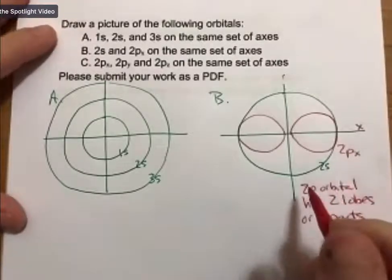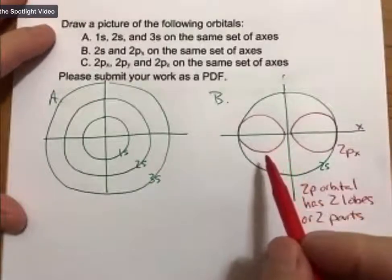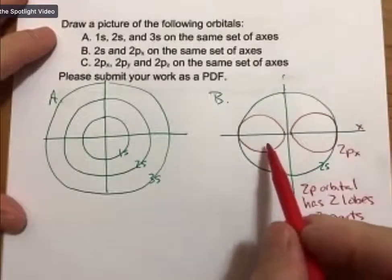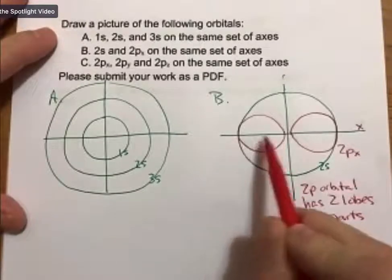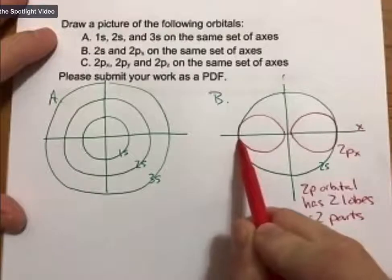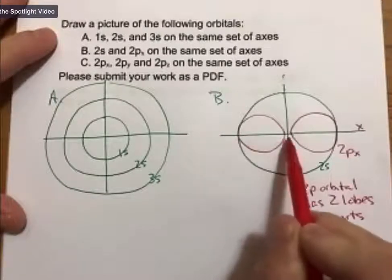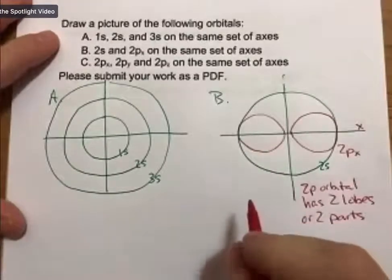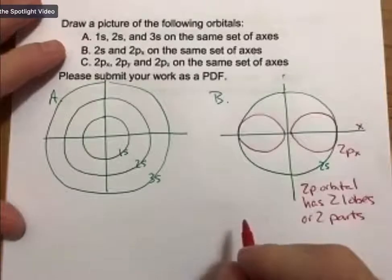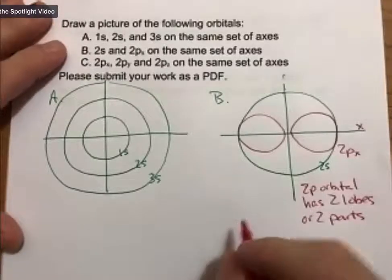The reason I wanted you to draw this, even though I didn't cover it in the lecture, is that you can see that the 2s and the 2p orbitals both end at approximately the same distance from the nucleus. That's an important point, so I'm going to write it down: the 2s and 2p orbitals both end at approximately the same distance from the nucleus.